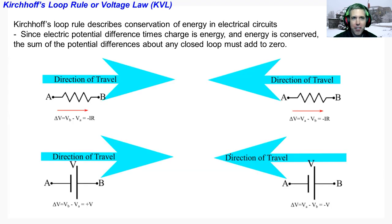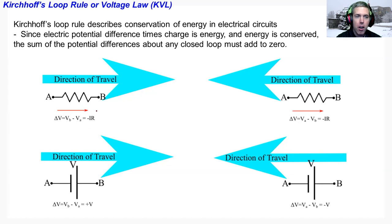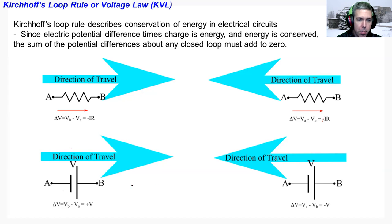The loop rule or voltage law works on conservation of energy: if you go around the whole closed loop, all your electric potentials or voltages add up to zero, with positives and negatives taken into consideration. If you have a resistor and you're traveling with the direction of current, ΔV = −IR. If you go against it, ΔV = +IR. For a battery: if you travel with it, it's a plus voltage; if you go against it, it's a minus voltage.